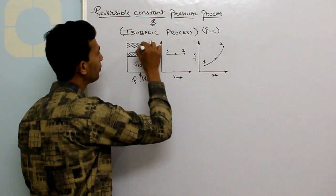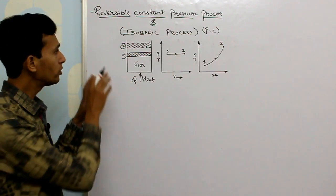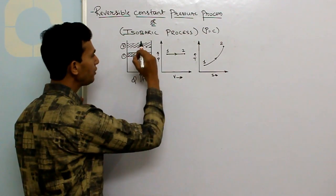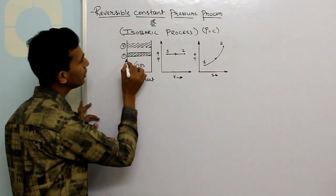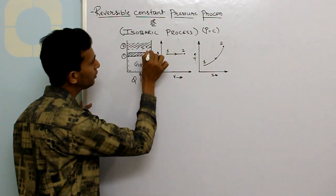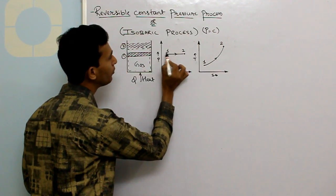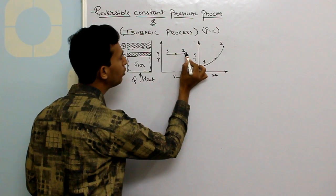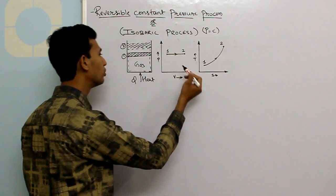During the completion of this process, the piston reaches a final position. This is our initial state 1 and this is the final state 2. The same is represented on the PV and TS diagrams. As the piston moves upward, the pressure remains constant but the volume is increasing — initially this was the volume and now this is the complete volume. On the PV chart, state 1 has pressure P which remains the same throughout up to state 2, but volume increases from V1 to V2.